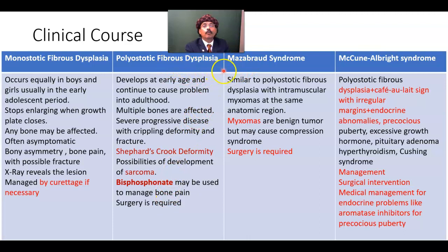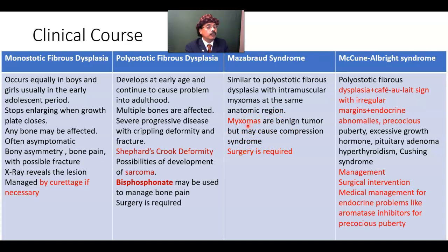Another variety of polyostotic fibrous dysplasia is called Mazabraud syndrome — similar to polyostotic fibrous dysplasia but with intramuscular myxoma. Intramuscular myxoma is a benign tumor at the same anatomic region. It may cause compression syndrome, so it also needs to be removed surgically along with management of the fibrous dysplasia.